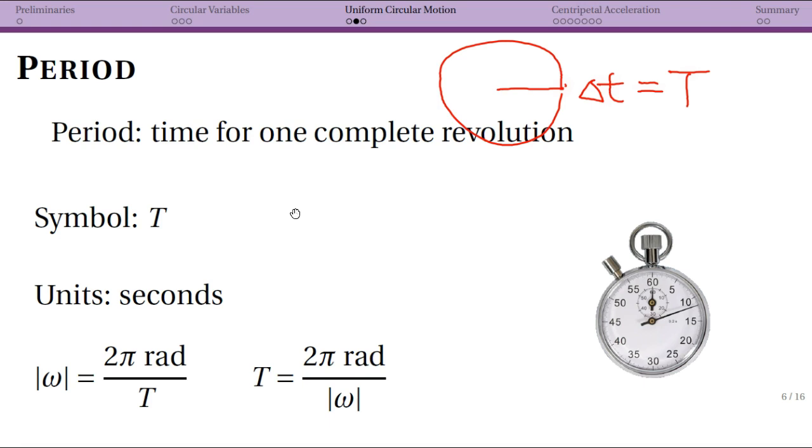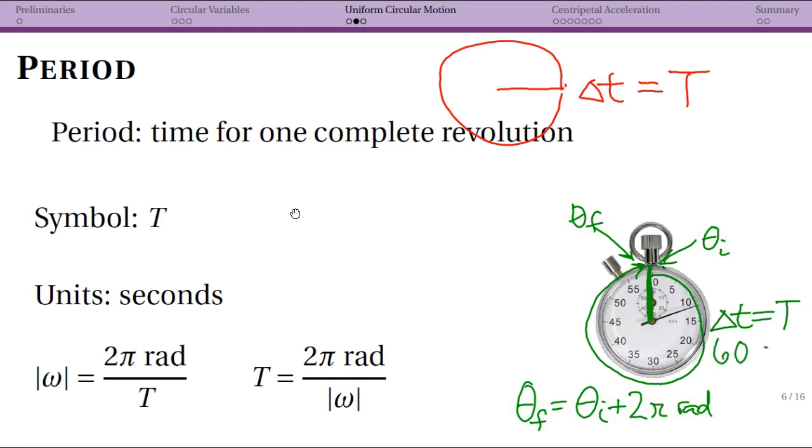Let me give an example with a stopwatch. The hand starts at θ_i, goes all the way around, and returns to θ_f, which looks equivalent to θ_i. So θ_f = θ_i + 2π radians. We usually remove the 2π factor since that's a whole circle. The time for this is the period, which for this stopwatch is 60 seconds. That's all period is - it comes up whenever you have one complete cycle of motion. We talk about it in circular motion and later with oscillations.